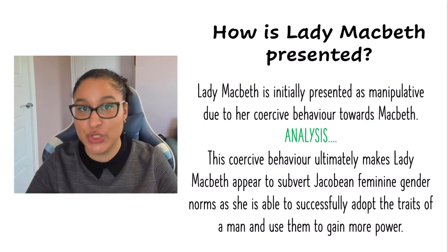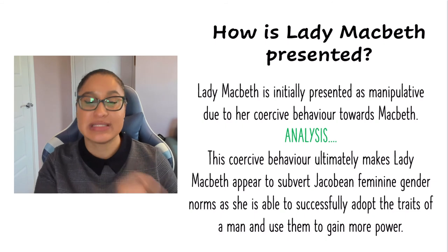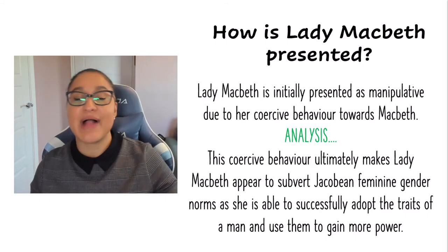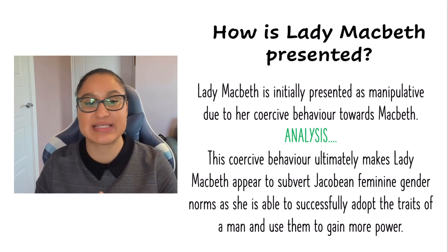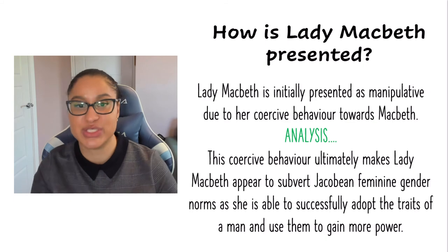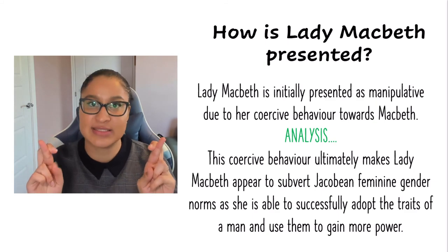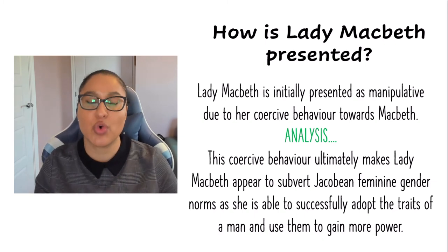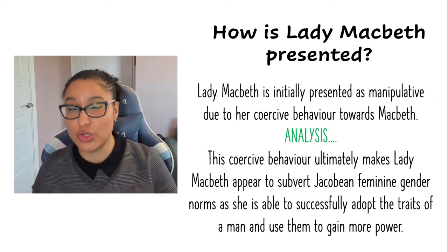As well as getting those opening sentences of your paragraphs right, it's also important to come back to your argument at the end of each paragraph. You can see an example here: 'Lady Macbeth is initially presented as manipulative due to her coercive behaviour towards Macbeth.' You then do your analysis, and then you link it back to your original argument — for example: 'This coercive behaviour ultimately makes Lady Macbeth appear to subvert Jacobean feminine gender norms, as she is able to successfully adopt the traits of a man and use them to gain more power.' Make sure you link your analysis back to your argument — they're best friends and don't like to be separated.